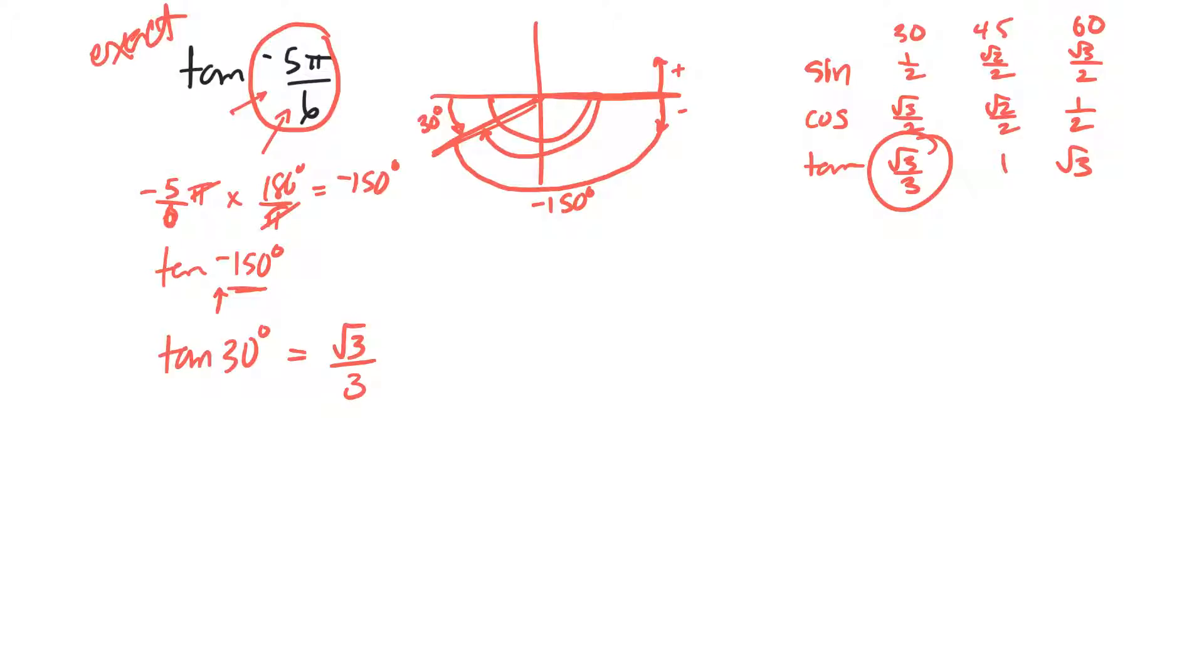In this case here, tangent, and we didn't talk about this in class, but tangent is a combination of y and x, and both y and x in this quadrant are both negative, and if you have two negatives, they'll cancel out and be positive.